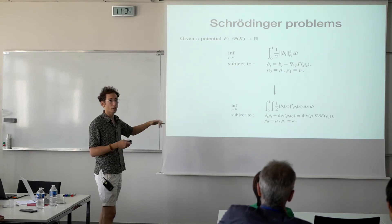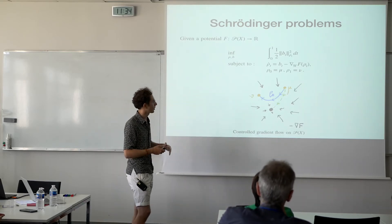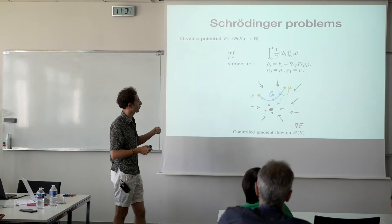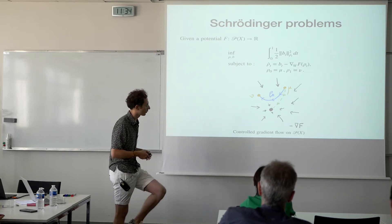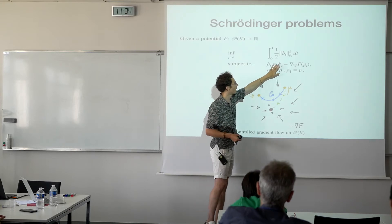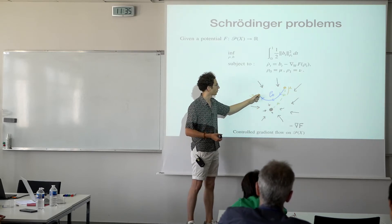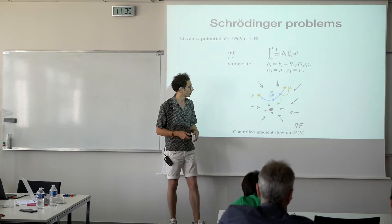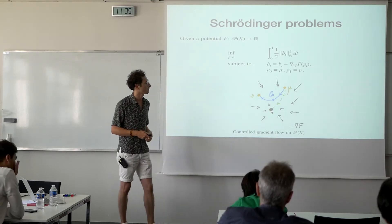This is what I call a generalized Schrödinger problem. Here's a nice picture to have in mind: this represents the infinite-dimensional Wasserstein space. We have two fixed endpoints, μ and ν, and we want to find a path ρ_t connecting one to the other. In green I drew the gradient flow — if you take B equal to 0, you follow the gradient flow and spend nothing. But you need to enforce the constraints, so you spend a little energy and control your path safely to ν.